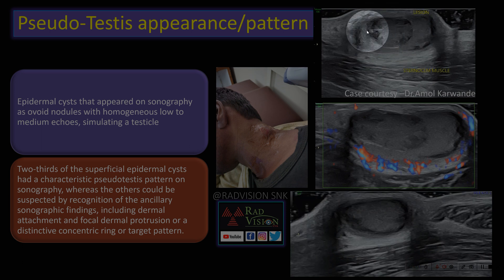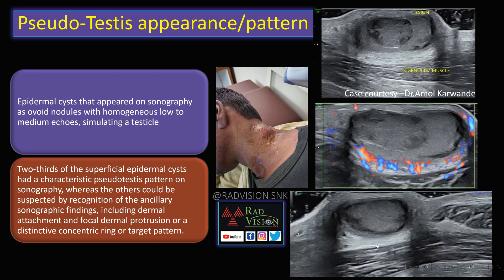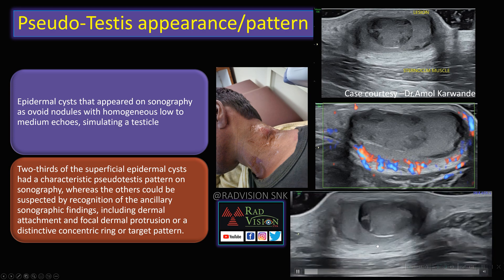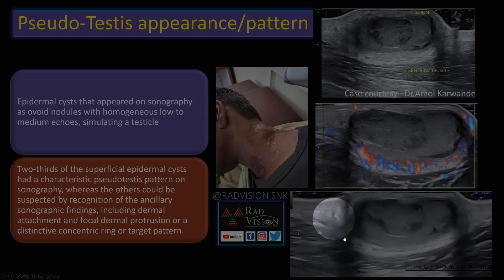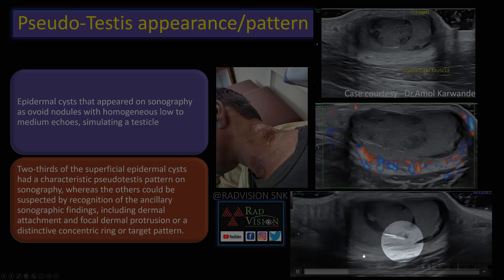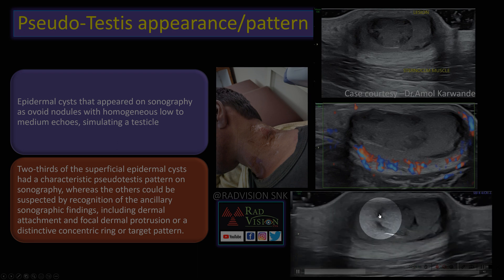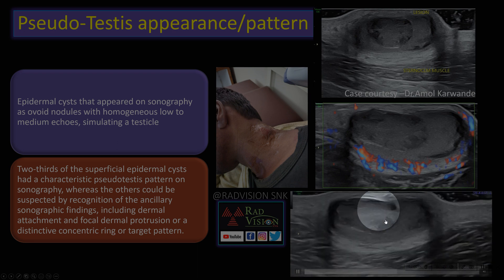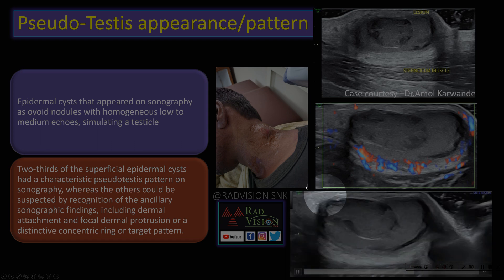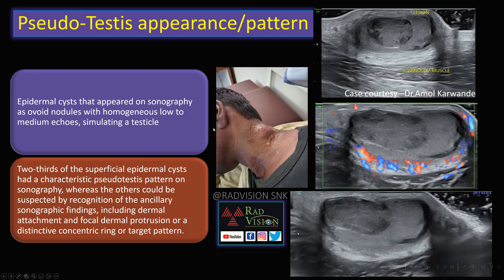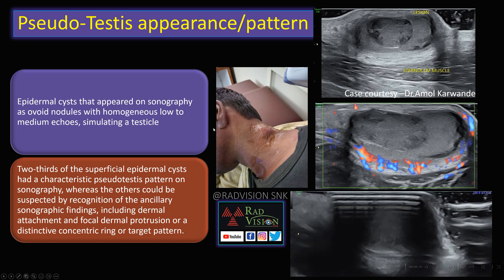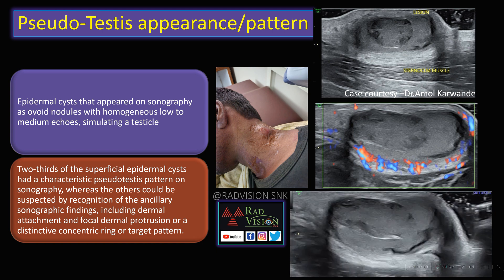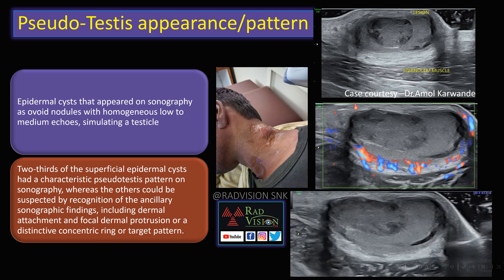This imaging echo appearance mimics a testicle, which is why it is called the pseudo testis appearance. Playing the video of this case, you can see a testicular-like structure noted in the sternocleidomastoid muscle with a central hypoechoic area and an echogenic area also showing a target pattern. Whenever you see this pseudo testis appearance or pattern, definitely suspect an epidermal cyst.